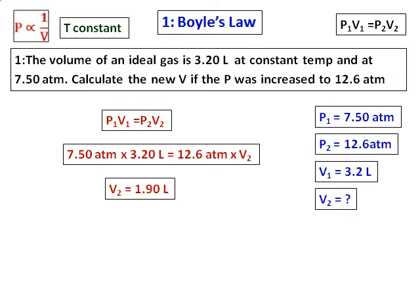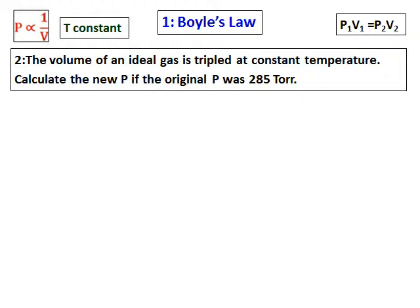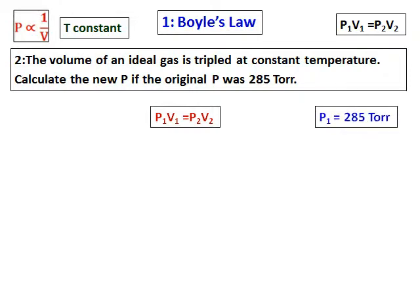Next question on Boyle's law using the same formula P1V1 = P2V2: the volume of an ideal gas is tripled at constant temperature. Calculate the new pressure if the original pressure was 285 torr. P1 is 285 torr. Let the initial volume be V1, so the final volume V2 is 3V1.